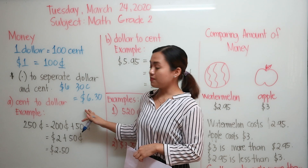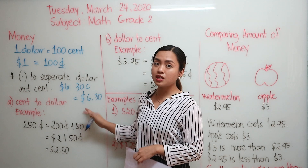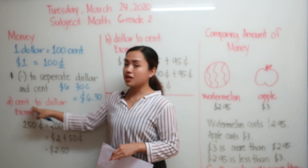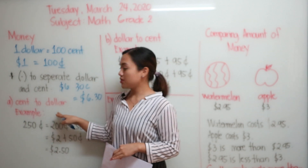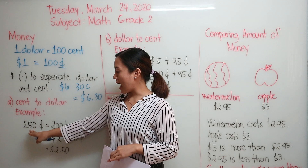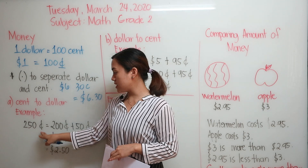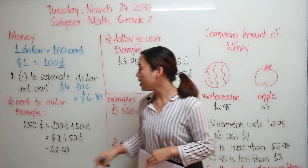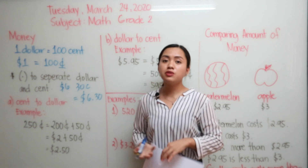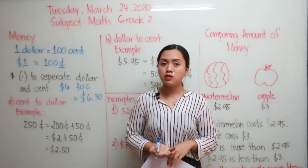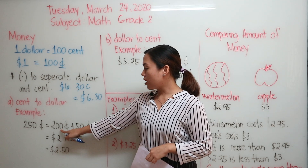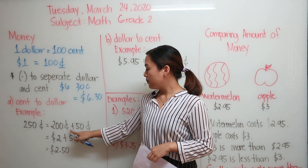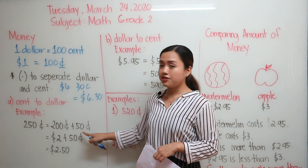Now we have here some examples. Let's try to convert. First we have cent to dollar. So for example, we have 250 cents. In order for you not to be confused, you can get 200 cents first plus 50 cents.